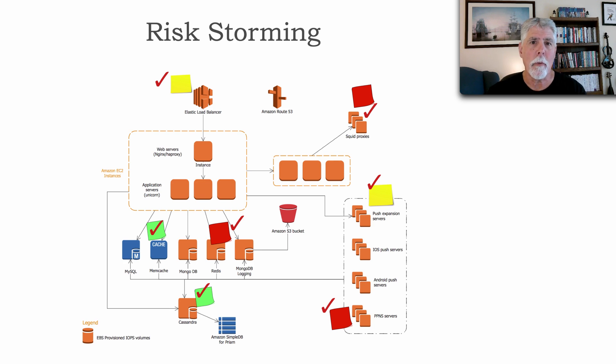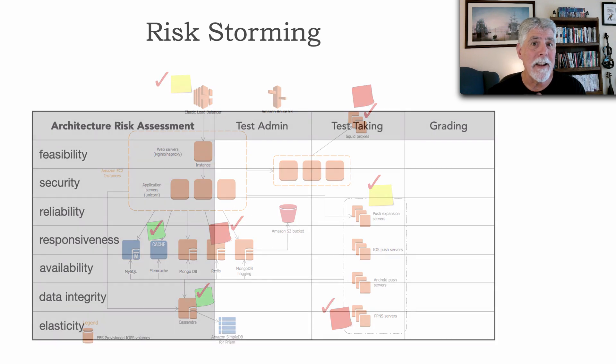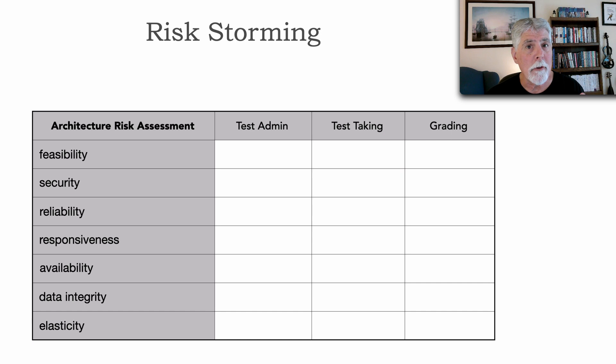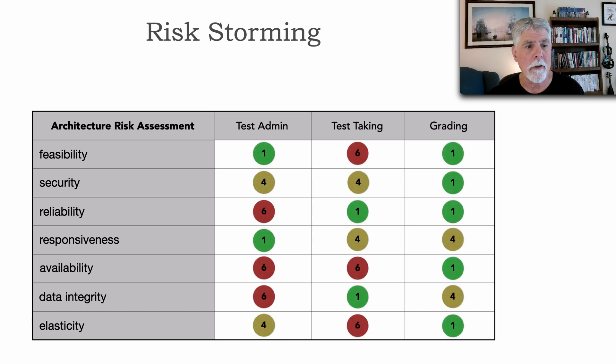And this use of risk storming eventually identifies risk areas across all of the areas, the context, across the criteria, eventually filling in this entire risk matrix I showed you in Lesson 128.